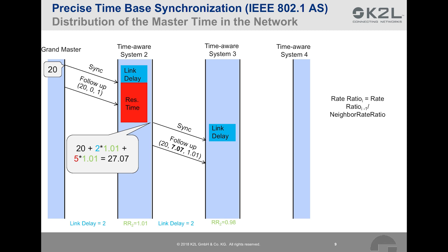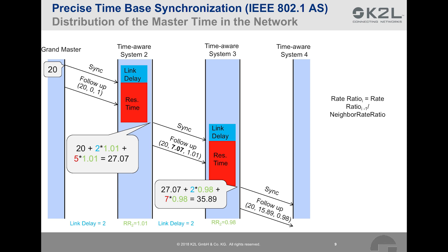When time-aware system 2 sends out its follow-up message, it contains the original time when the grandmaster sent out its sync message, the delay until the device sent out its own sync message — which is 7.07 — and its rate ratio, assumed to be 1.01. The last value allows time-aware system 3 to calculate its own rate ratio. For time-aware system 3, the process repeats itself. After the processing time, the sync message is sent out to the next device in the tree structure. The grandmaster time is calculated based on the link delay, the residence time, and the rate ratio, and the follow-up message is sent.